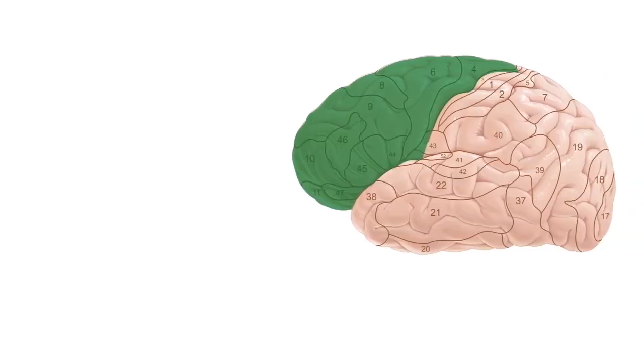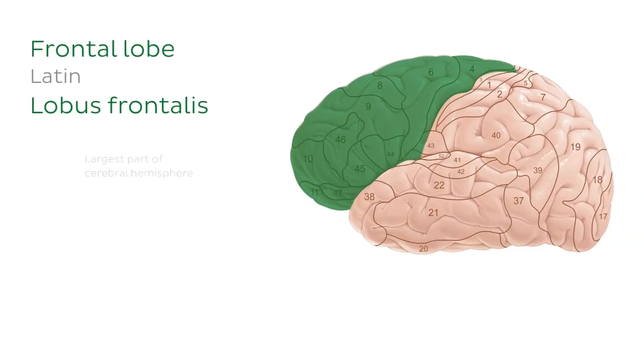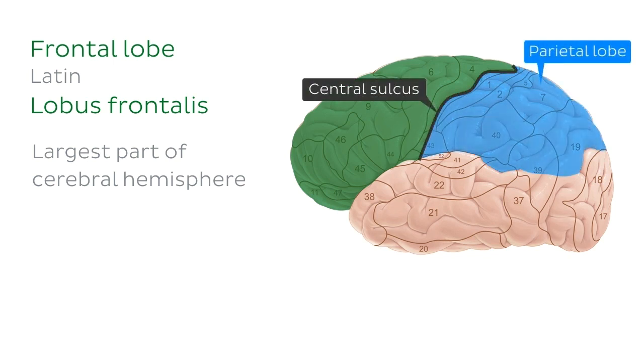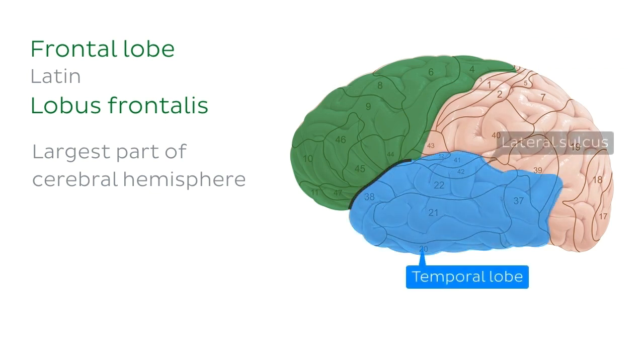First, let's familiarize ourselves with the frontal lobe, which is the largest part of each cerebral hemisphere. It is separated from the parietal lobe by the central sulcus and from the temporal lobe by the lateral sulcus.